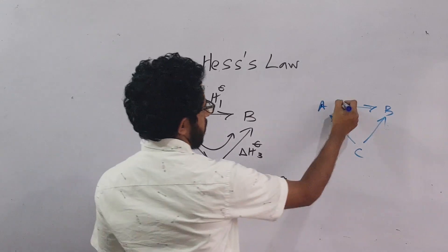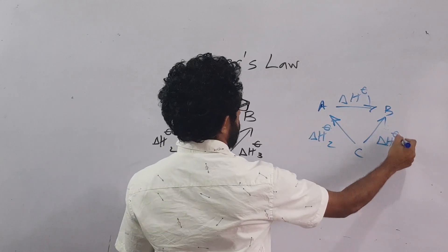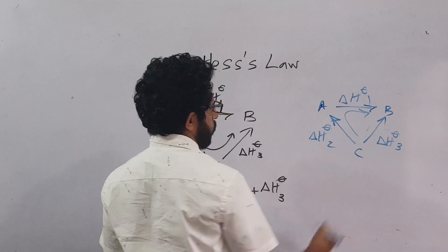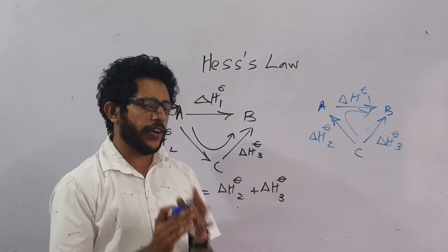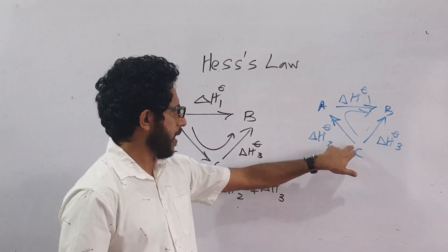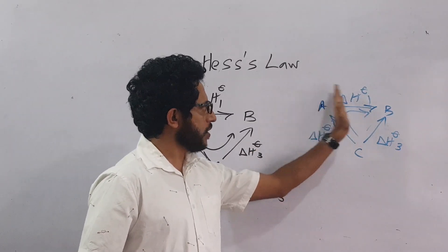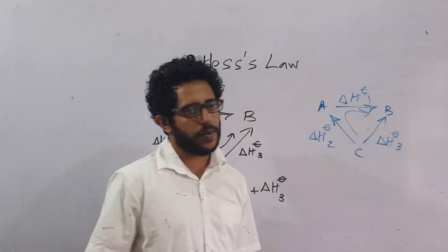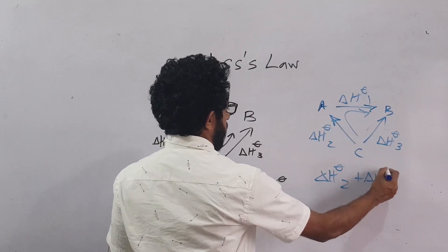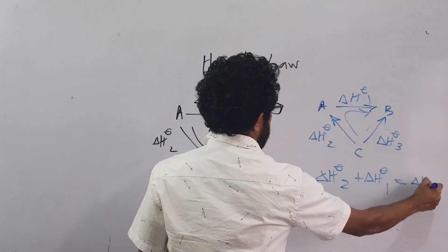If this is delta H1, this is delta H2 and this is delta H3, then we have to change. According to Hess's law, these two equal this one. What we do is follow the arrow direction, tail to head, tail to head. These two follow the same way, this goes the opposite direction. So delta H standard 2 plus delta H standard 1 is equal to delta H standard 3.